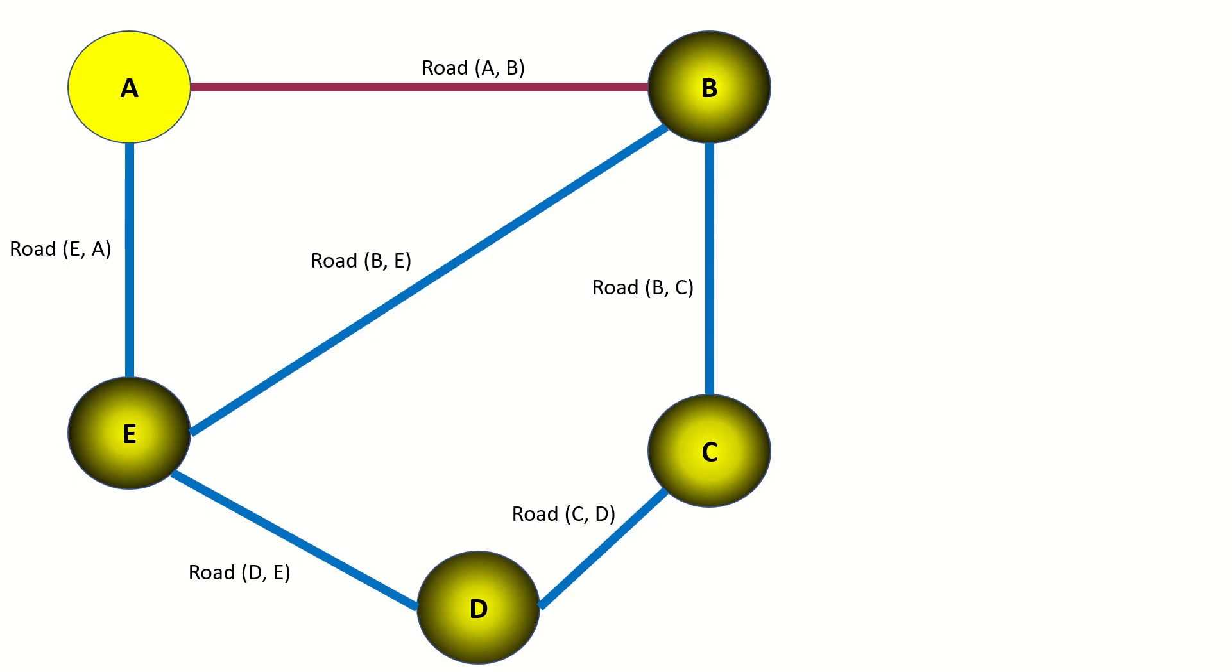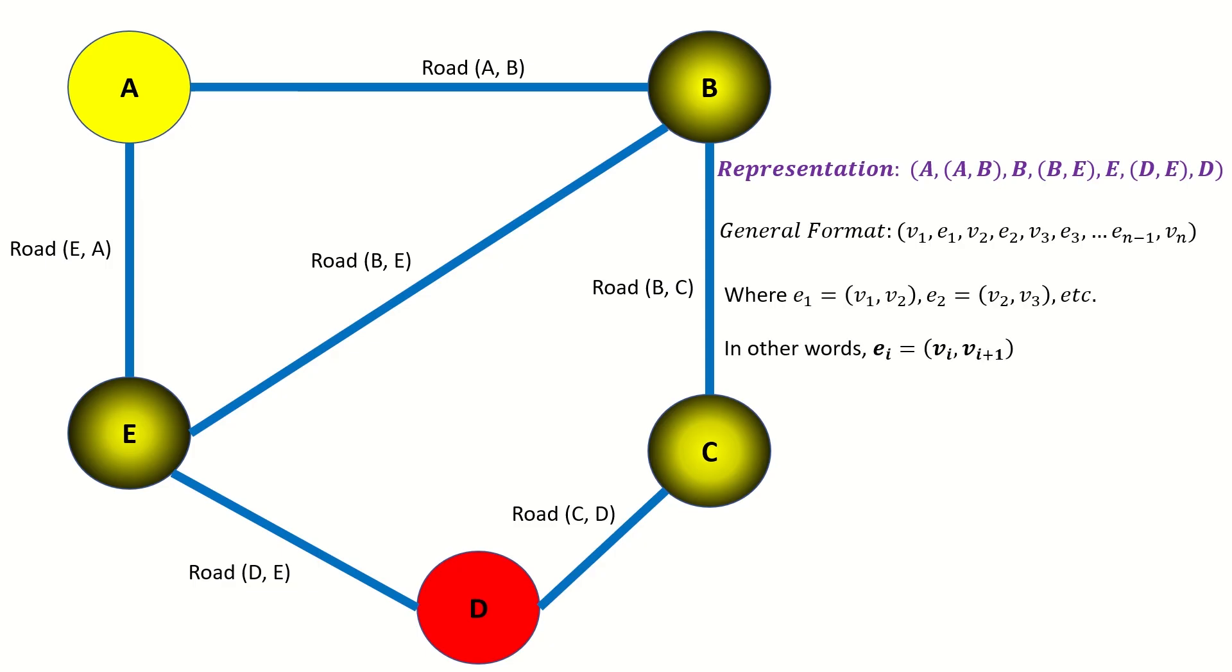Now when you have a walk like the one you see here, one way you can represent it formally is with a list of vertices alternated by edges, as seen here. The general format of this list representation is shown beneath, where the v's are vertices and the e's are edges, and the endpoints of any edge ei are vi and vi plus 1. In other words, the endpoints of each edge in the list are the preceding and succeeding vertices to that edge in the list.